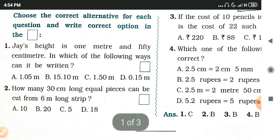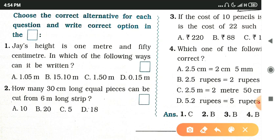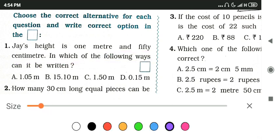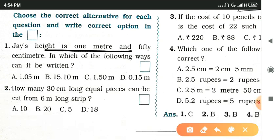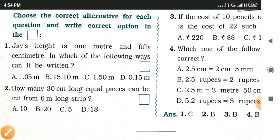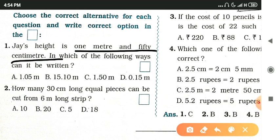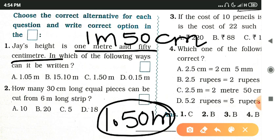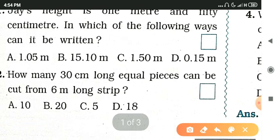The first question says that Joy's height is 1 meter and 50 centimeters. In which of the following ways can it be written? We are talking about 1 meter and 50 centimeters, so it can be written as 1.50 meters. The correct answer is option C.